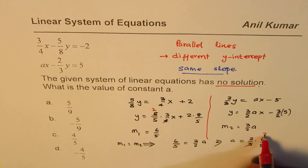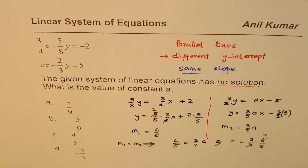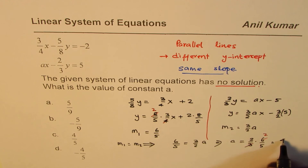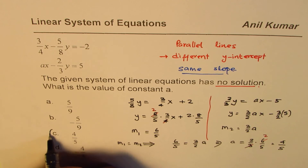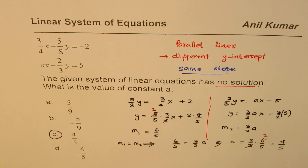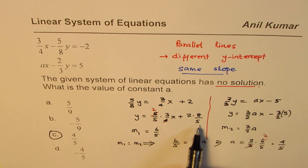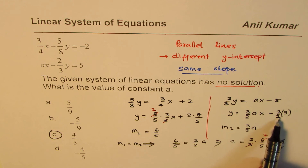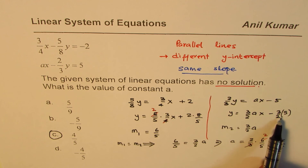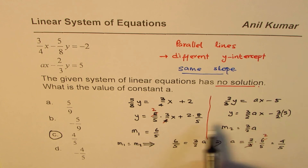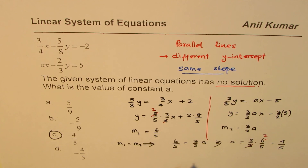Setting 6 over 5 equal to 3 over 2a, a equals 2 over 3 times 6 over 5, which gives 4 over 5. So option C is the correct answer. The y-intercepts are 16 over 5 and 15 over 2, which are different, confirming the lines are parallel.